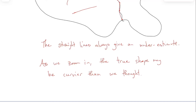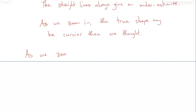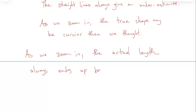As we zoom in, the true shape may be curvier than we thought — meaning the actual length always ends up being more than we thought, because this is true of things in real life. As you zoom into them, they actually are more curvy and more jagged than they seem. This is basically true of everything in reality. This is not true of abstract mathematical shapes, of course — a straight line is perfectly straight because it's not a real object. But a real object in real life is always more wiggly or curvy than we thought.